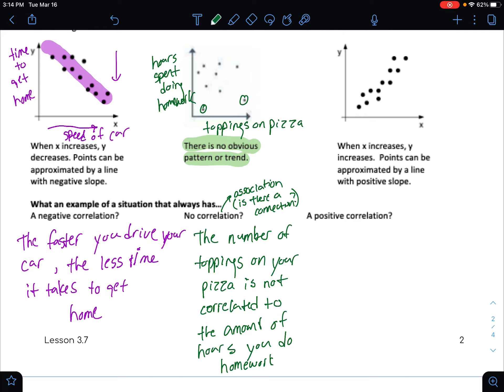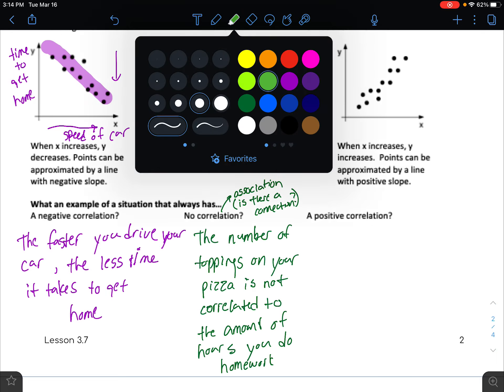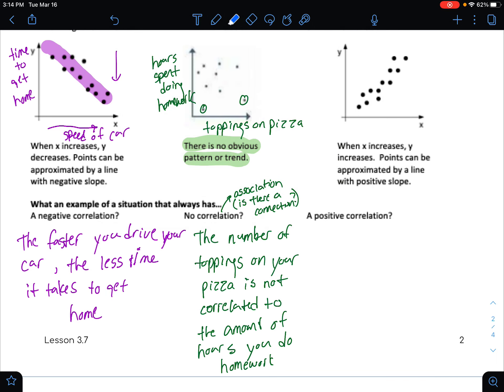And then we have a positive correlation. Positive correlation means that the points are generally lining up into a pattern and it's a fairly linear pattern and it's sloping in a more positive direction. As X increases, as the X value increases, so does the Y value. And so we have a positive sloping line.